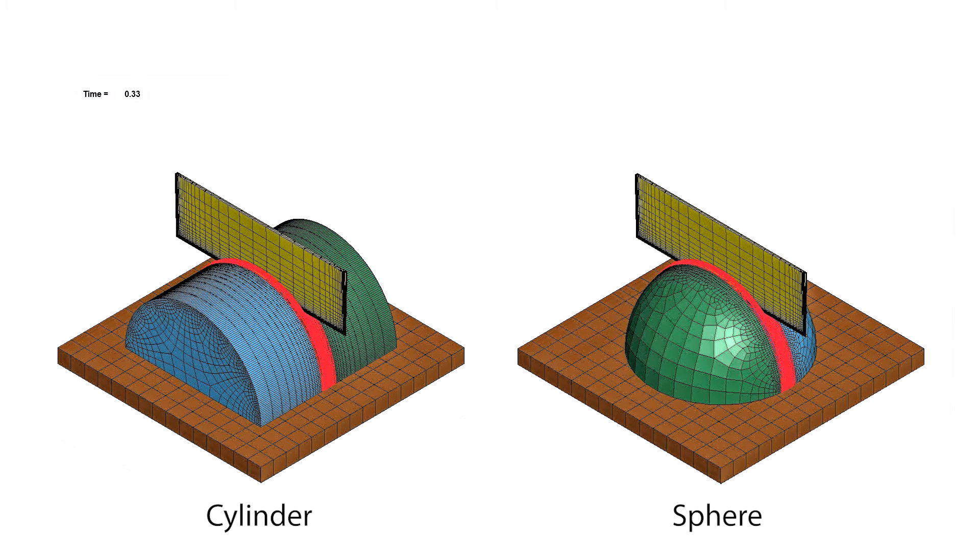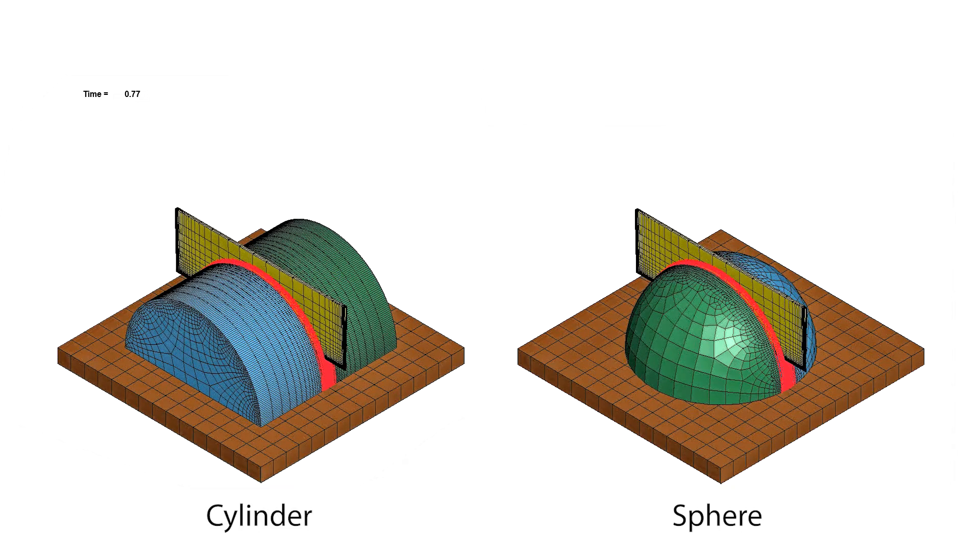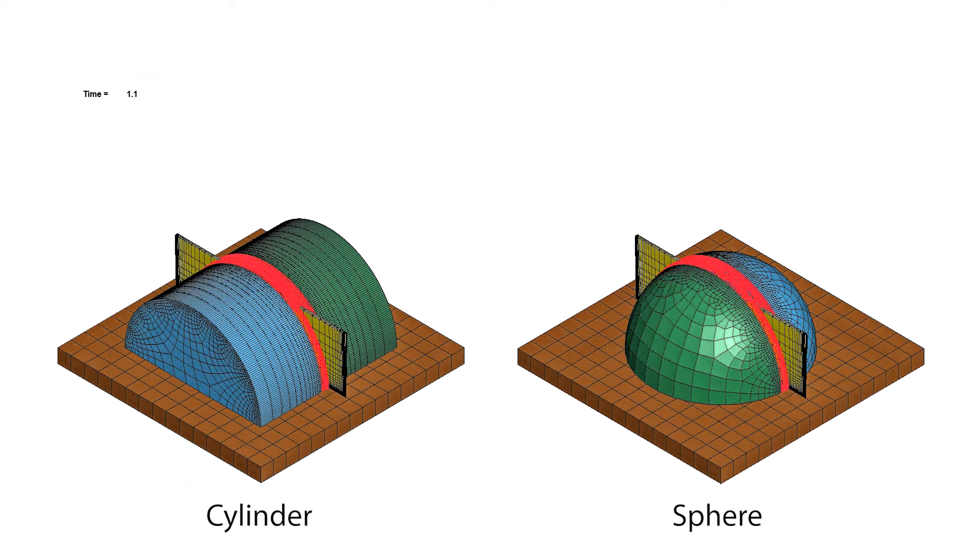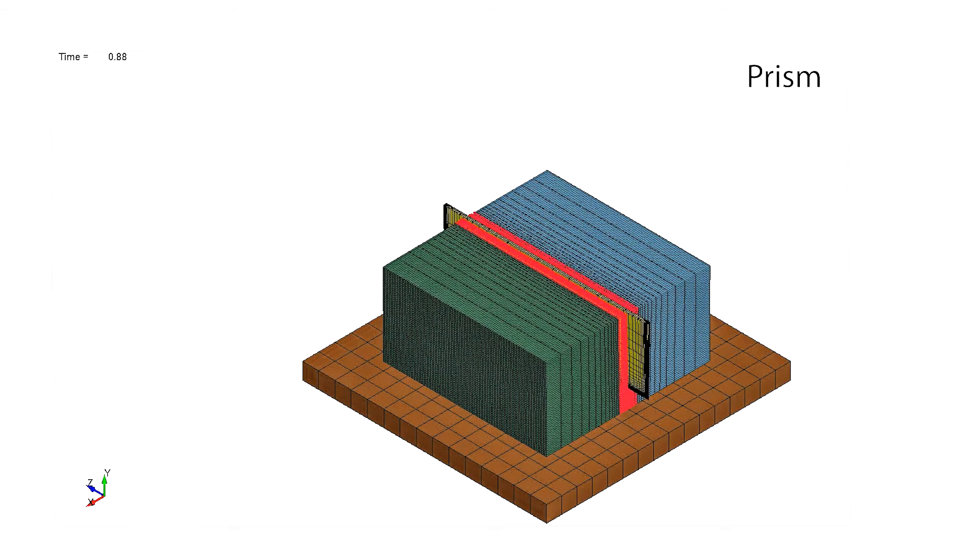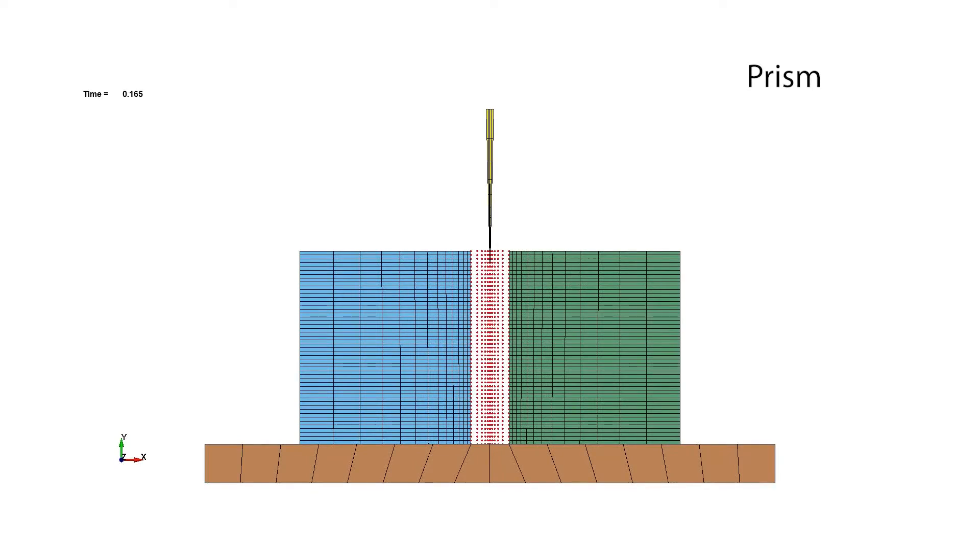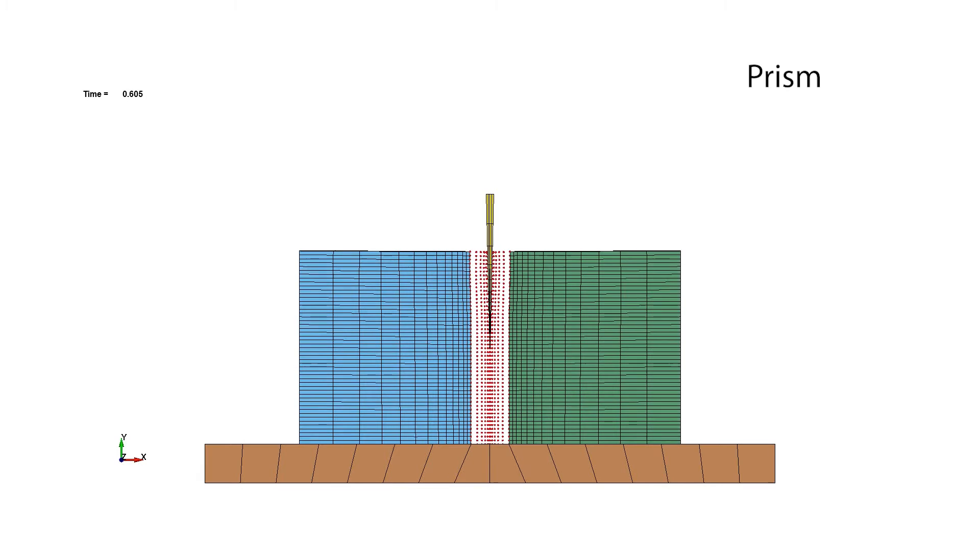We generate ground-truth cutting data in a commercial simulator, which allows us to precisely control the experimental setup, such as shape and material properties. Given such data, we can also leverage the nodal displacement field trajectories as an additional ground-truth signal.